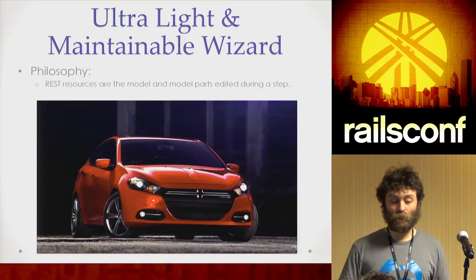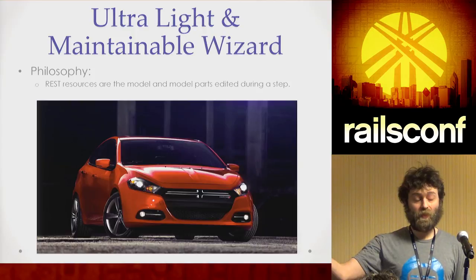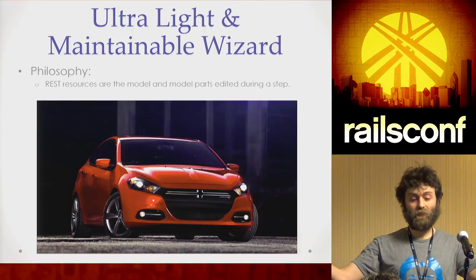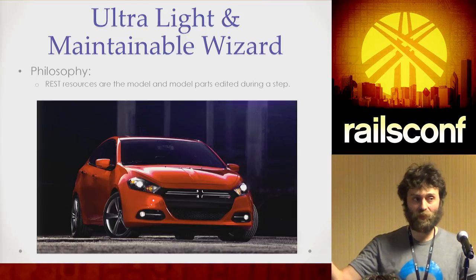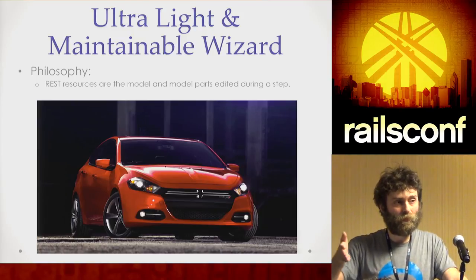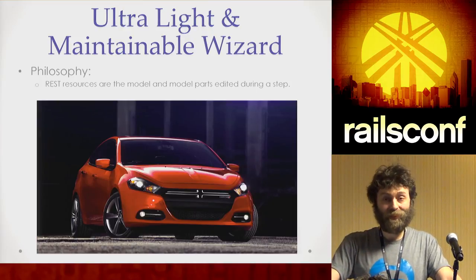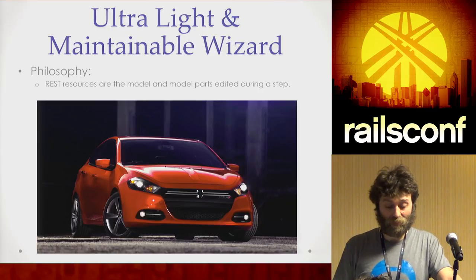If you think about the REST resources, it's very simple. You have the main model — that's the main resource. And then you have the model part, nested model part, under the main model — that's the second resource. You have two RESTful resources. Every time you're walking through the steps of a wizard, you're actually editing a model part, which makes it very clear what the REST resource is.